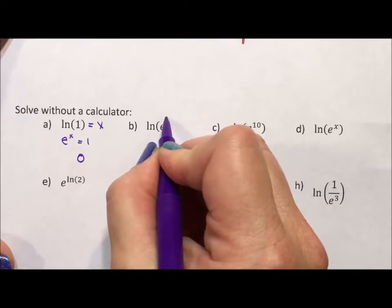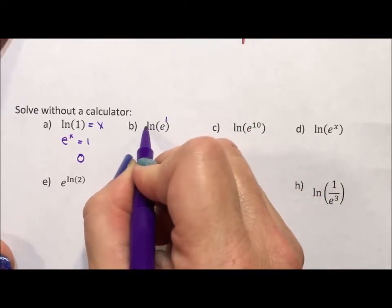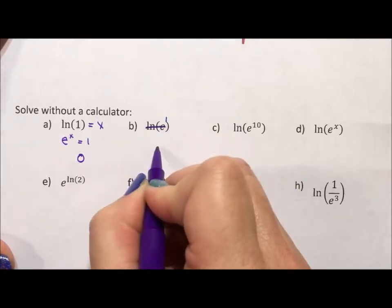This has an implied exponent of 1. These are inverses of each other, so there and back again, they undo each other, and we're left with a 1.